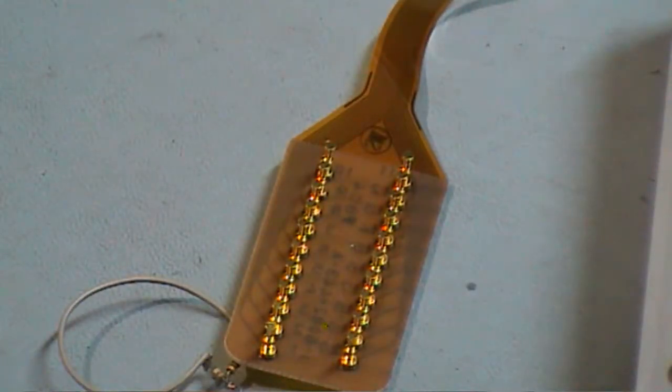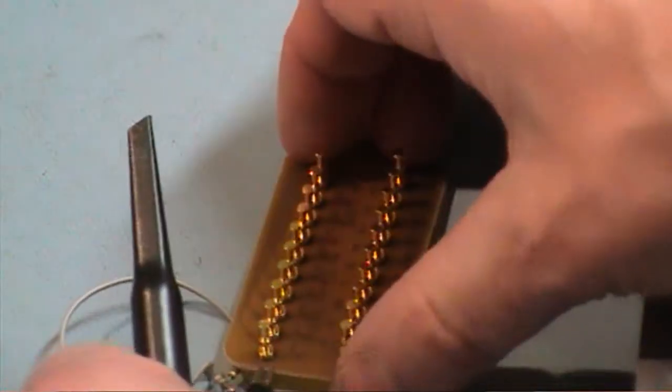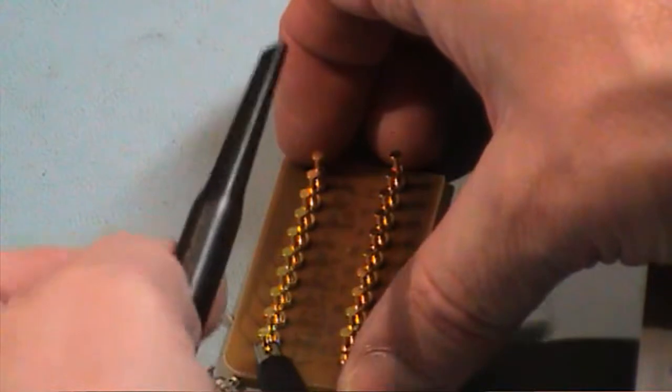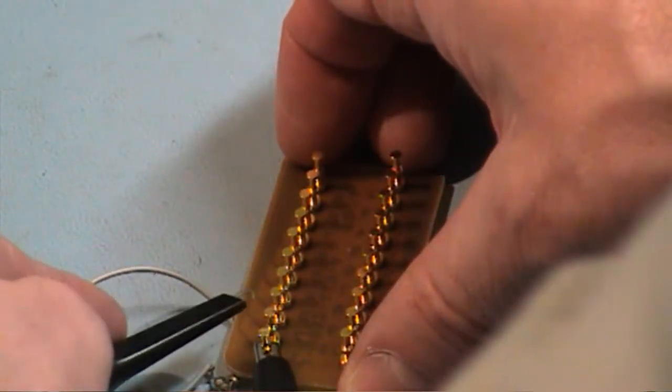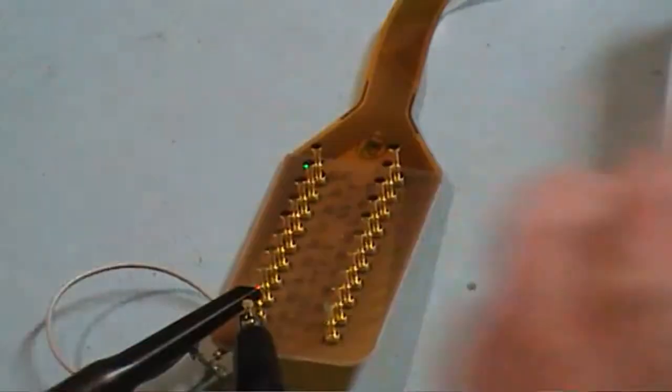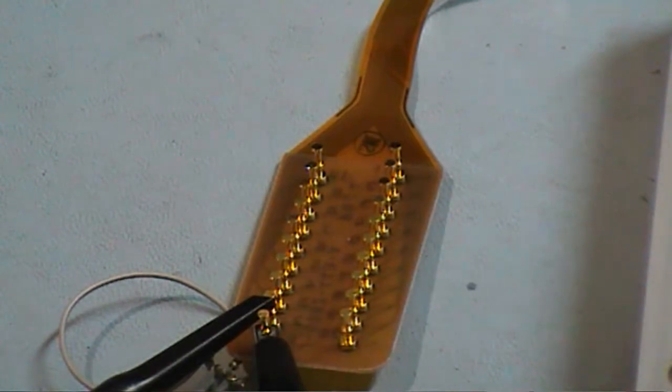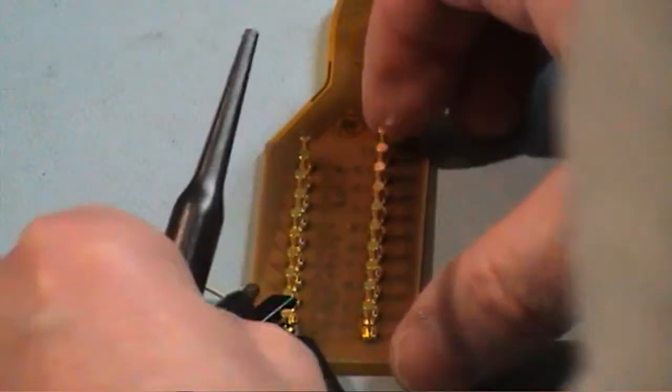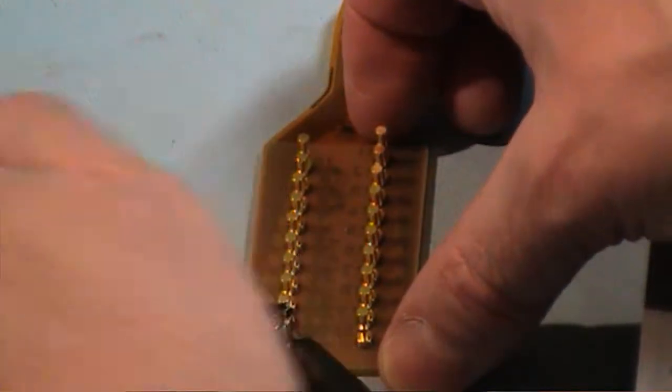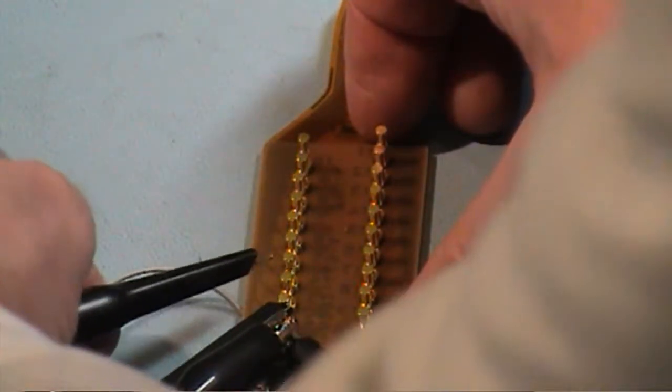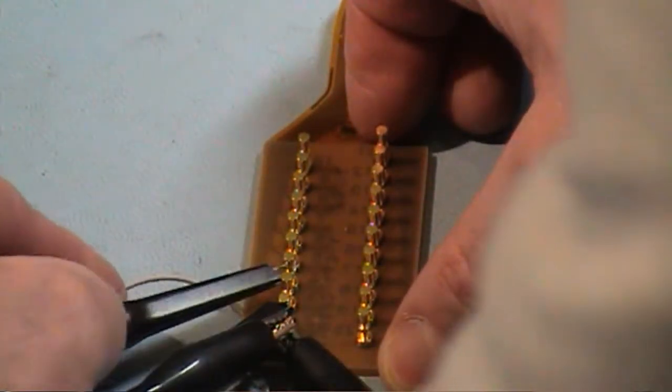I will connect channel 1 to pin 2 on the scope, and then my channel 2 output to pin 4. Incidentally, pin 1 is ground.